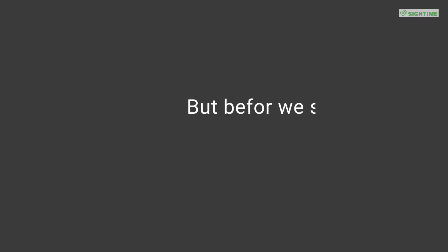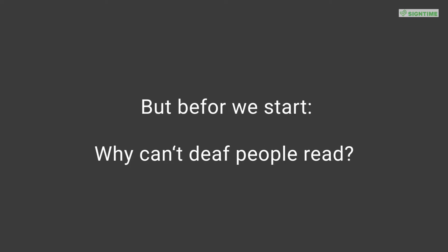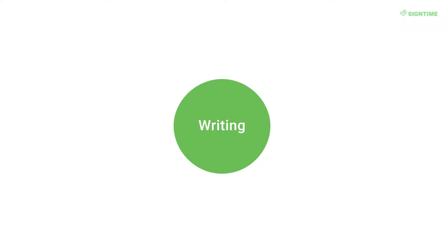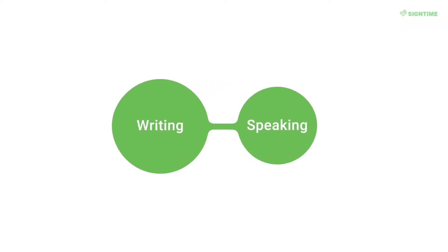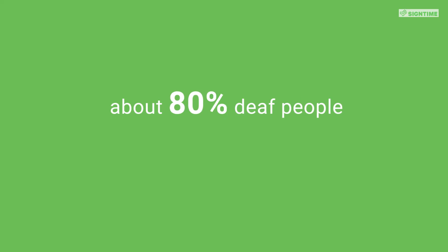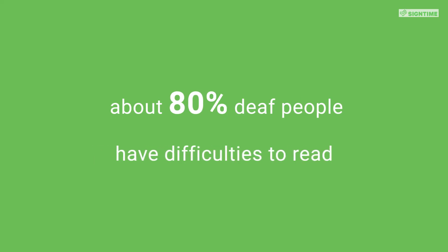But before we start — why can deaf people not read? Because writing is a representation of speaking. But if you never have heard a word, it is difficult. Therefore, around 80% of deaf persons are functional illiterates. They have difficulties to read and understand text.